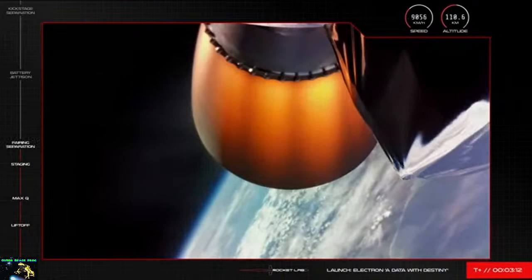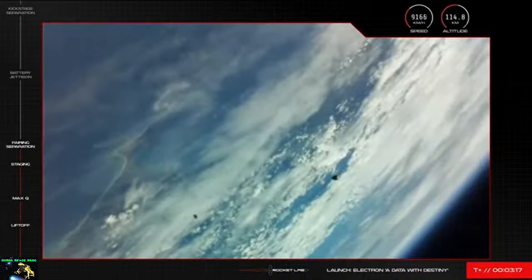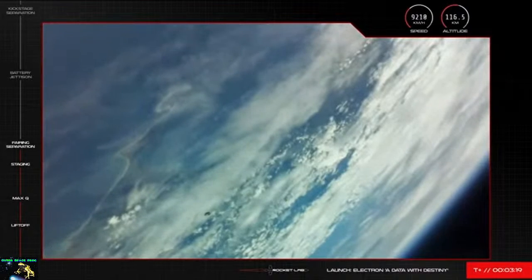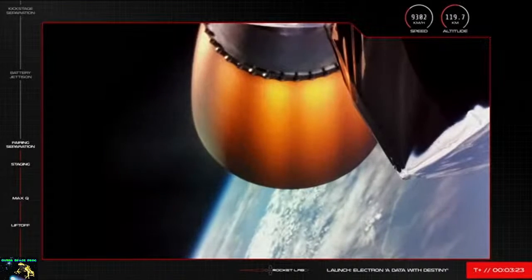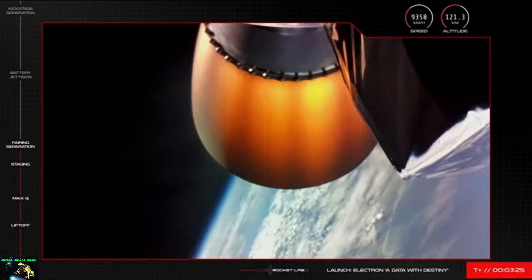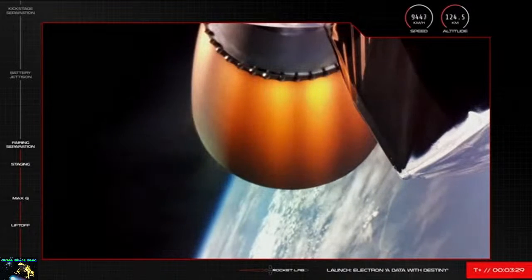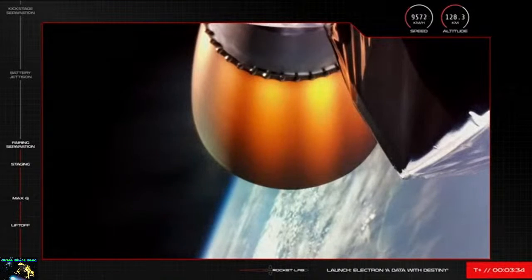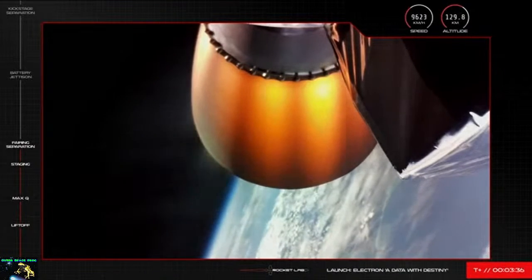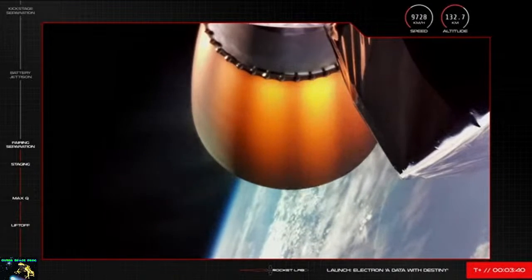Soon that fairing will fall away as we get rid of the dead weight. Let's keep an eye out for that. And there they go, Electron's fairing halves have been deployed. We've got a short time gap now between this event and the next one coming up for Electron's second stage, which involves swapping out the batteries that power the second stage Rutherford engine. The mission is continuing nominally though as we approach that next milestone with the second stage traveling at a speed of nearly 10,000 kilometers an hour at an altitude of over 130 kilometers.